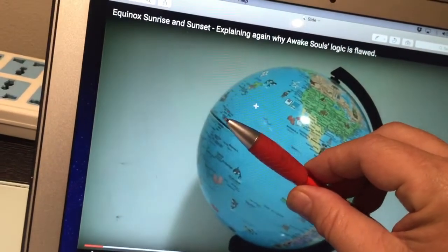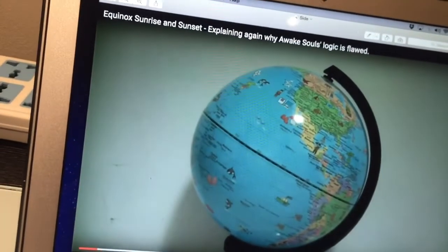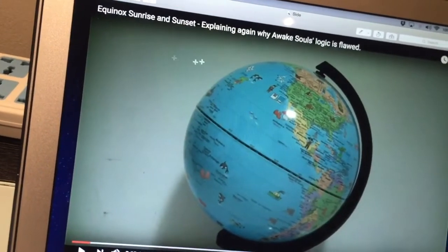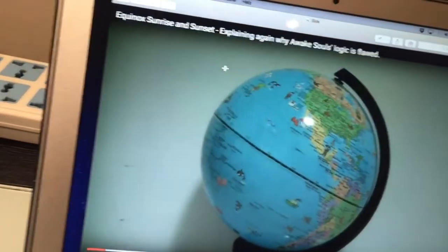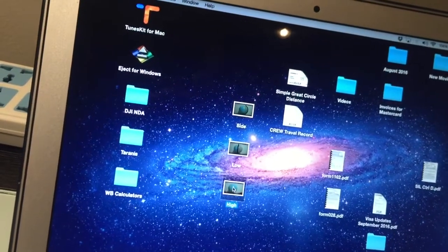And because all the lines of latitude are parallel, it's occurring with every single line of latitude. So at every point on the Earth, the latitude is dead flat on the Terminator on the Equinox.